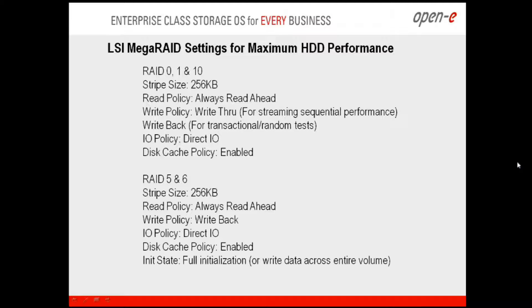Typically I set it to Write Back, as they recommend a battery backup if you use Write Back. If not, please use Write Through. The Write Back function is set for transactional or random workloads — we usually see a very noticeable on-the-fly performance increase with this setting. The IO policy should be set to Direct IO, and the disk cache policy should be enabled.